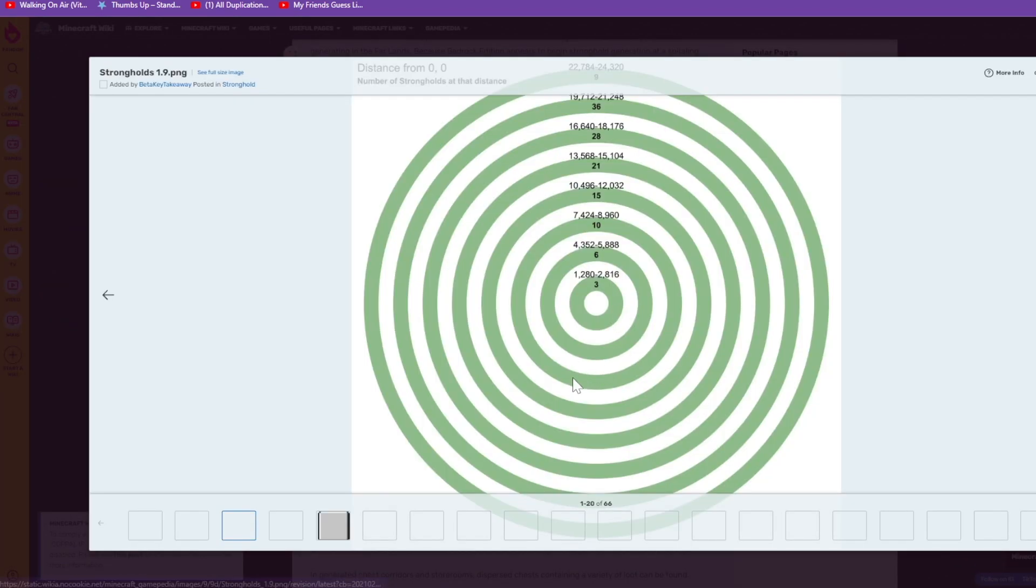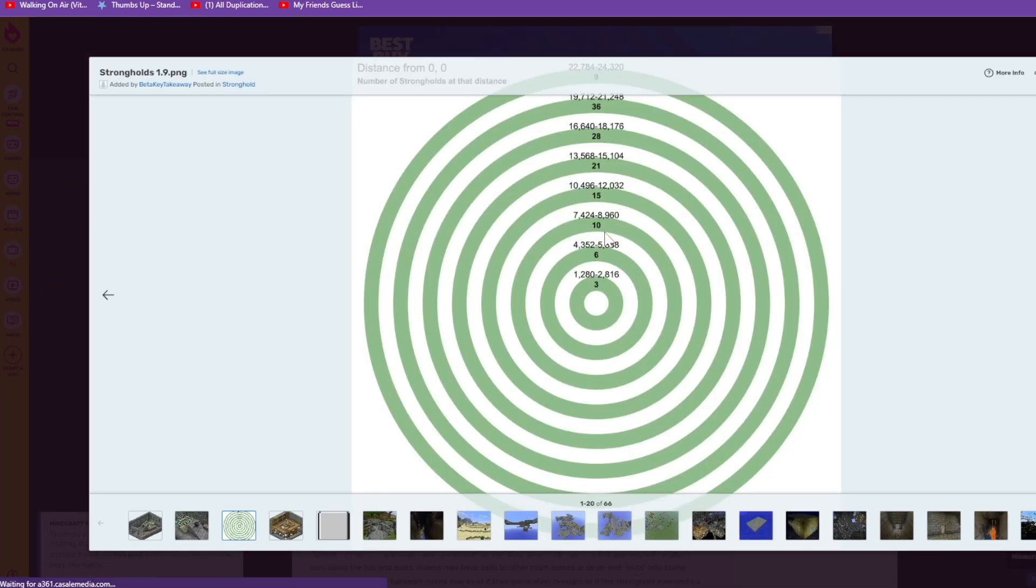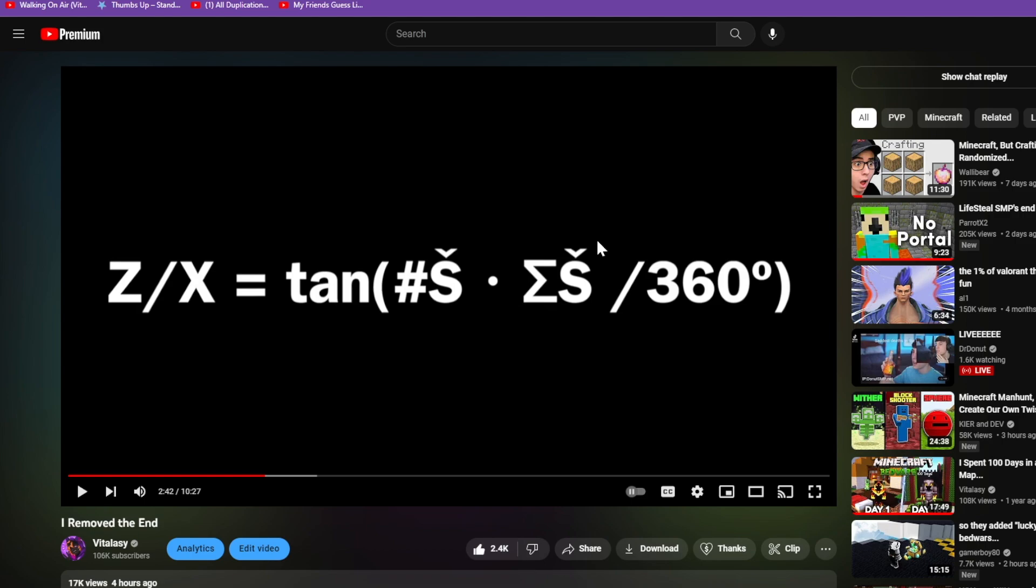Now on the Minecraft wiki you can see the graph of how many strongholds are on those rings, and that leads us to our next variable, mu S. What mu stands for and why I put that there—I know it's usually used in physics and this is totally not how you should use it—but what that's saying is the total number of strongholds in that ring.